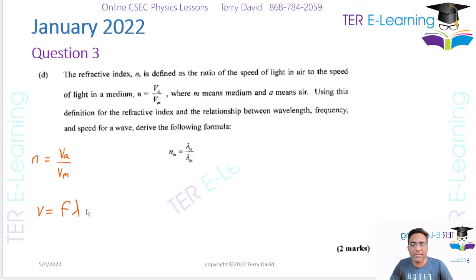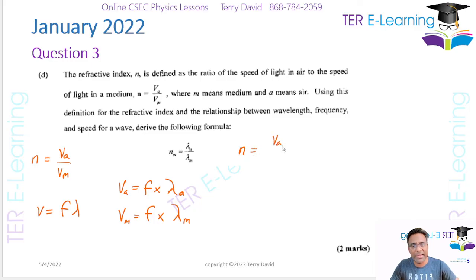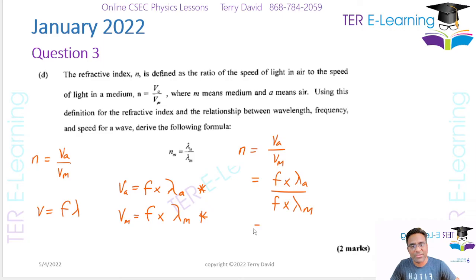So we're told that n equals v-a over v-m. We also know that v equals f-lambda — that's our wave equation. So v-a equals f times lambda-a, and v-m equals f times lambda-m. Since n equals v-a over v-m, we replace these to get f·λa over f·λm. The f's cancel because frequency doesn't change between media, giving us n equals lambda-a over lambda-m.